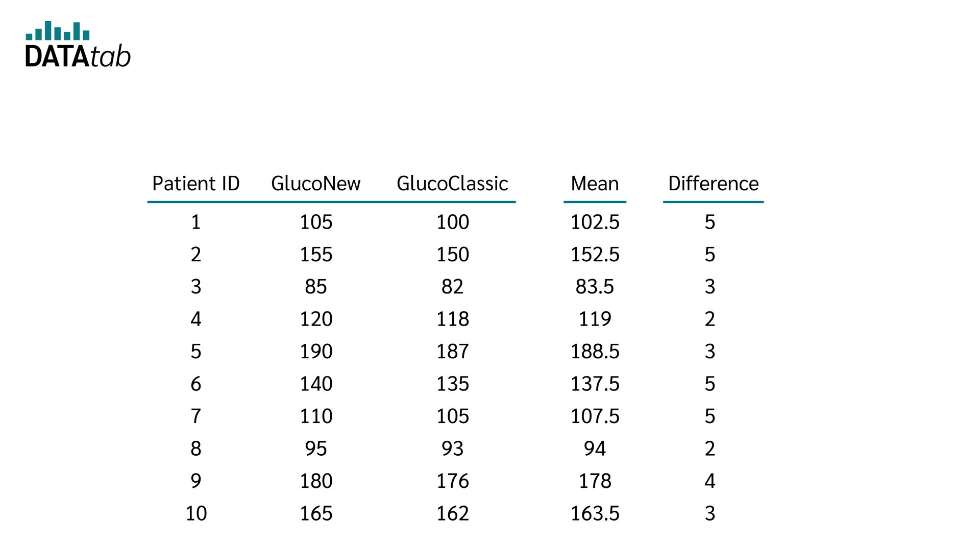So now we have for each pair the difference between rater 1 and rater 2, and for each pair the mean of rater 1 and rater 2.